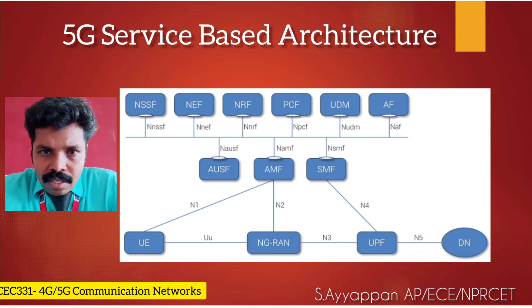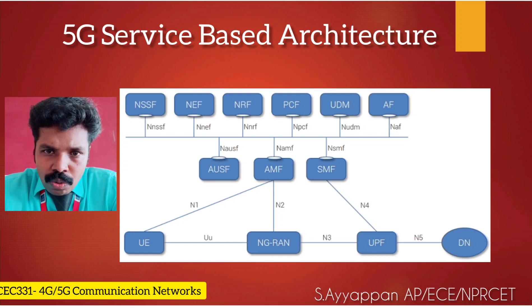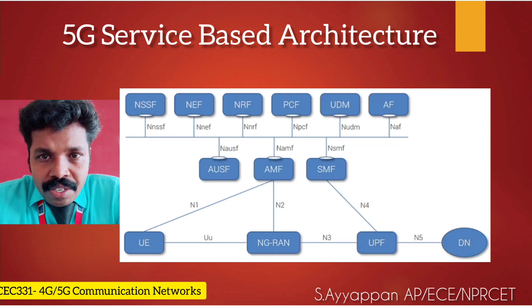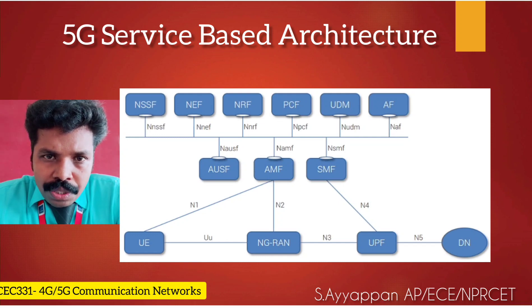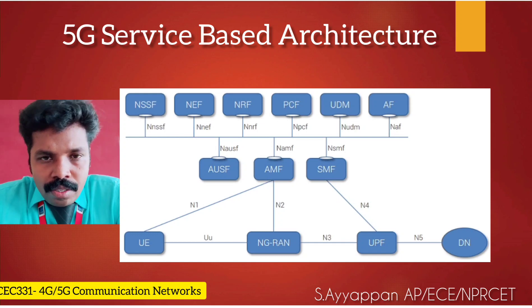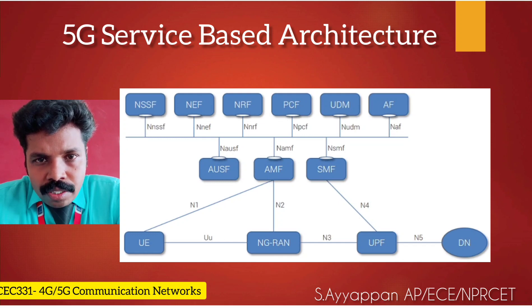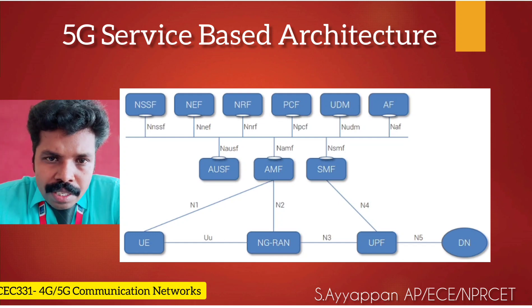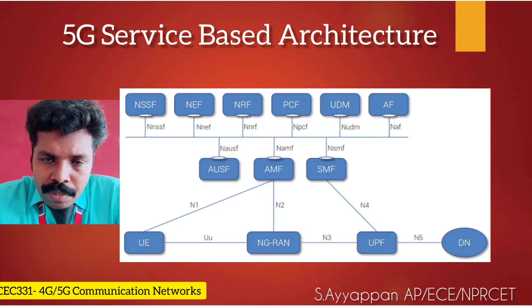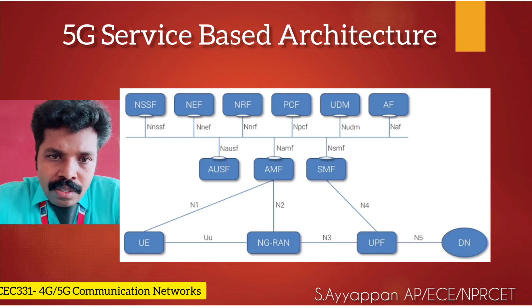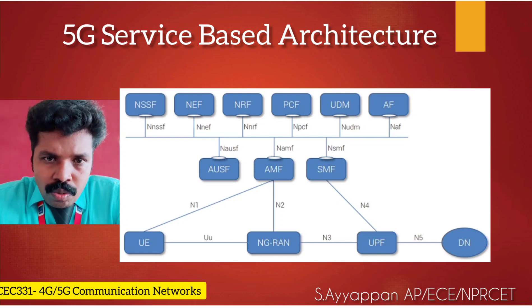All the UE details are connected to the core network. We have two components within it which are called CU, meaning Centralized Unit, and DU, meaning Distributed Unit, and RU, which is the Radio Unit. These components are also defined by Open RAN.